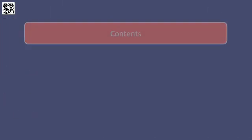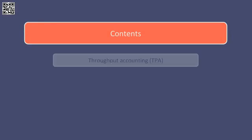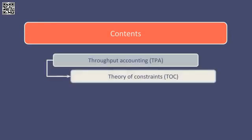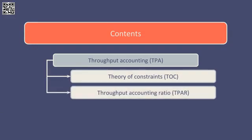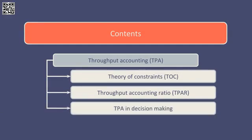In this session we are going to cover the topic of throughput accounting. We are going to discuss and apply the theory of constraints, calculate and interpret the throughput accounting ratio and suggest how this ratio could be improved, and we will also apply throughput accounting to a multi-product decision making problem.